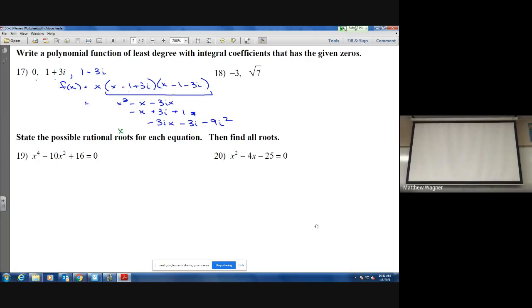All right, then we just want to simplify. We wind up with x squared minus 2x, the 3i's cancel, the 3i x's cancel, and then we're left with plus 9. And we still have the x out front, so my remaining function would be x cubed minus 2x squared plus 9x.